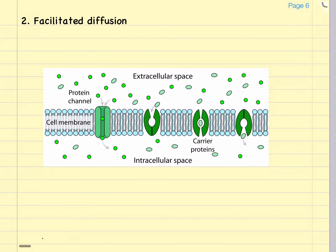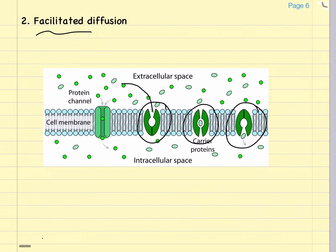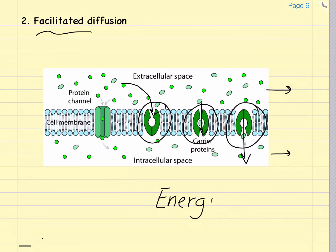The second method of drug absorption across the cell membrane is called facilitated diffusion. This method requires cell membrane carrier proteins, which take molecules in and transport them through into the intracellular space. This process is a little bit quicker than passive absorption. It does rely on a concentration gradient, but it does not require energy.